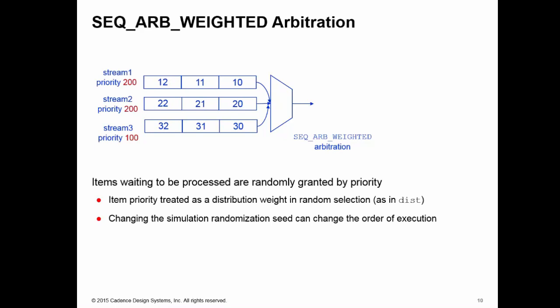Now my stream 3 items stand a chance of being executed. I have 3 items here waiting to be served: 10, 20, and 30. I'll randomly pick one according to their weight. This makes stream 1 and 2 items twice as likely as stream 3 items, but it does mean I can get a stream 3 item out. I do have that probability of that happening.